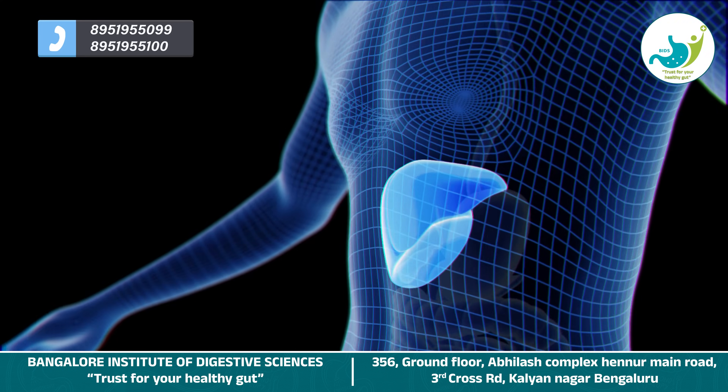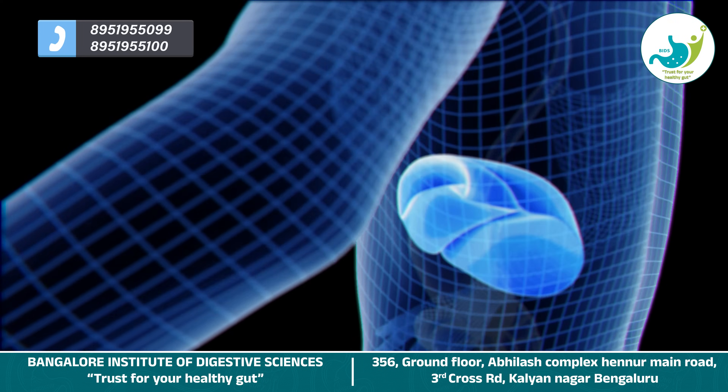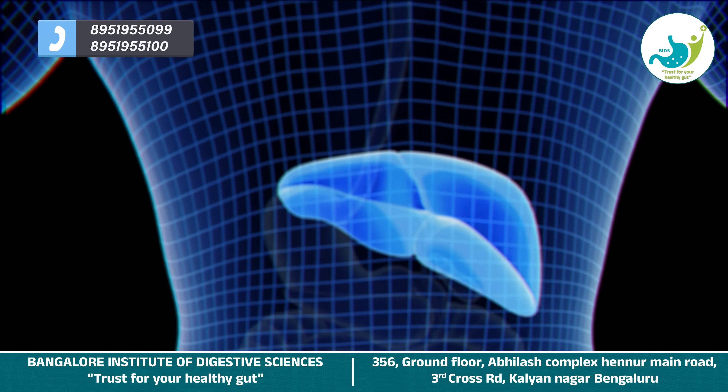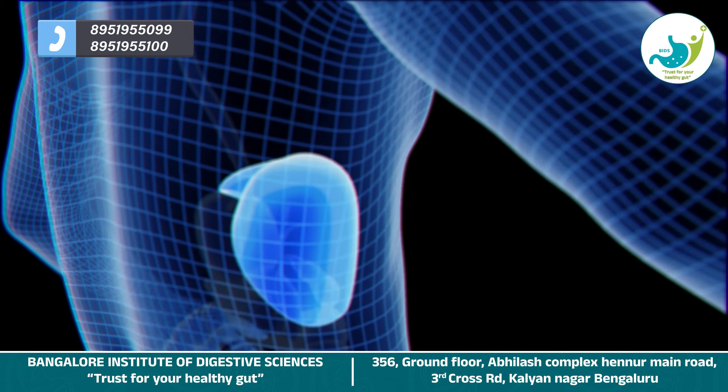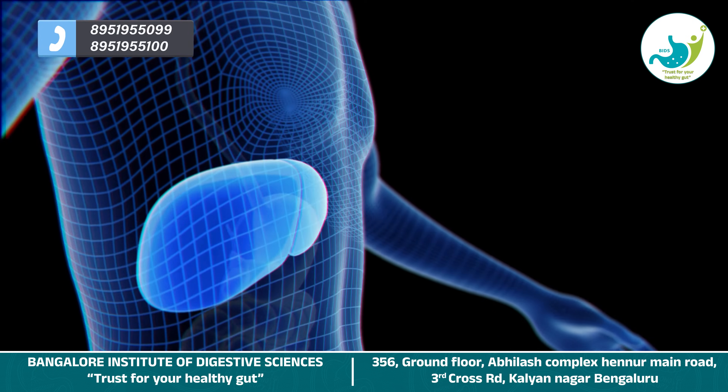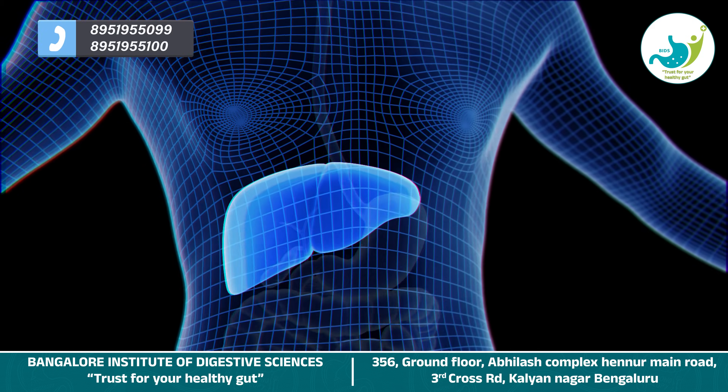The term has been changed from fatty liver to Metabolic Associated Steatotic Liver Disease (MASLD), because this can happen in lean patients also and the old term did not indicate the metabolic dysfunction associated. The components of MASLD include some metabolic dysfunction in the form of either glucose intolerance, diabetes mellitus, dyslipidemia, or hypertension, along with accumulation of fat in the liver.